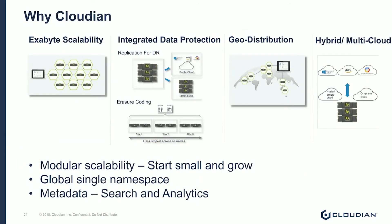So why do customers look at Cloudian as their object storage platform of choice? Exabyte scalability is definitely one of our key selling points. HyperStore is built on a peer-to-peer cloud storage architecture. S3 is the core, and we are able to scale to thousands of nodes and billions of objects in buckets. As demand grows and capacity requirements increase, customers can add servers on a granular basis, and the cluster does not have to be uniform — you can have a mix of different hardware devices and create a hugely scalable cluster. This gives customers great flexibility to grow from hundreds of terabytes to petabytes and exabytes of scale, with no downtime.